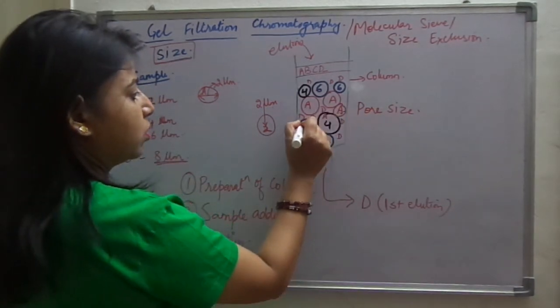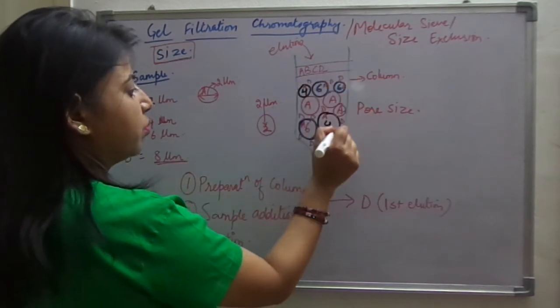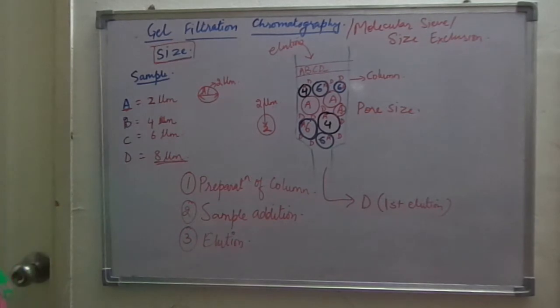A can come here also, here also, here also. A is a small component. It can come in all the large beads.